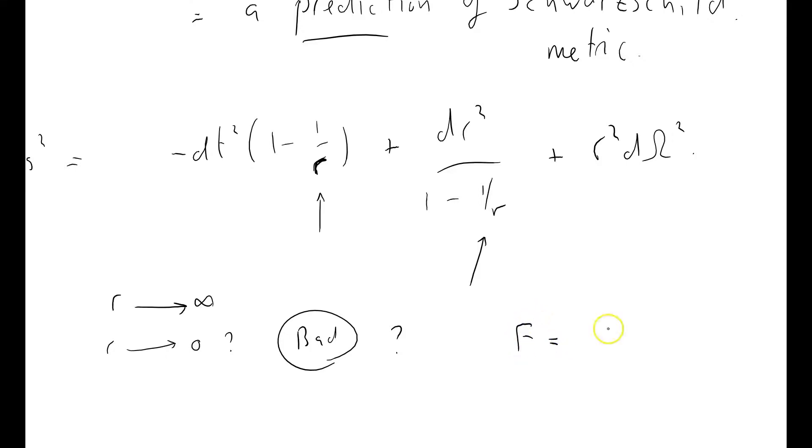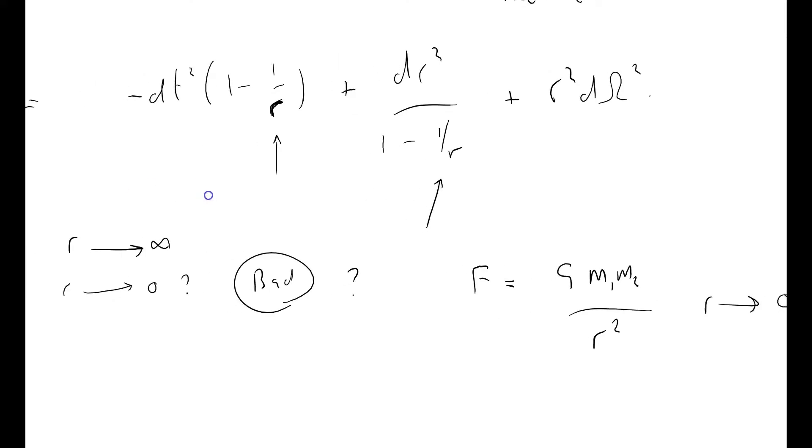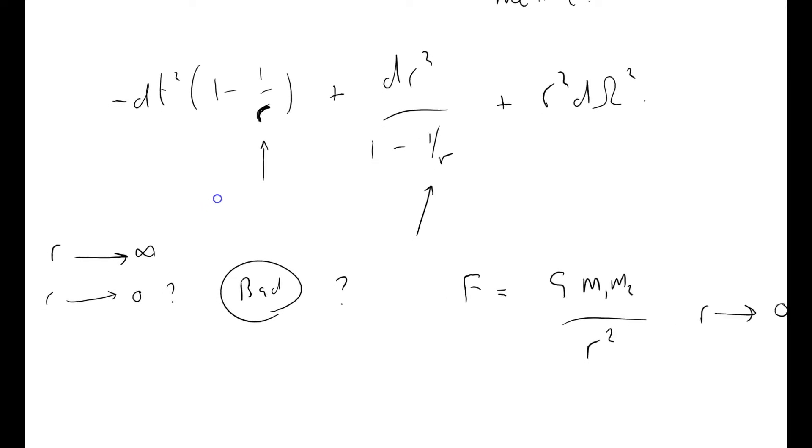I mean, even in the Newtonian system, we've got F equals gm1m2 over r squared. And of course, as r approaches zero, this force goes to infinity. So you're kind of expecting there to be some bad infinities at r equals zero.